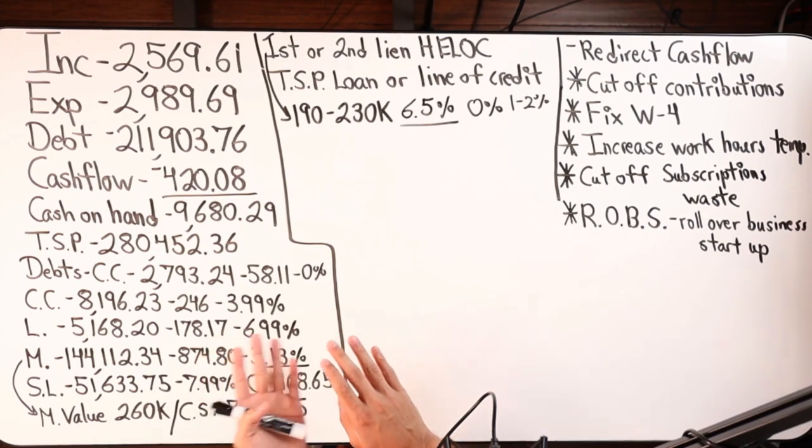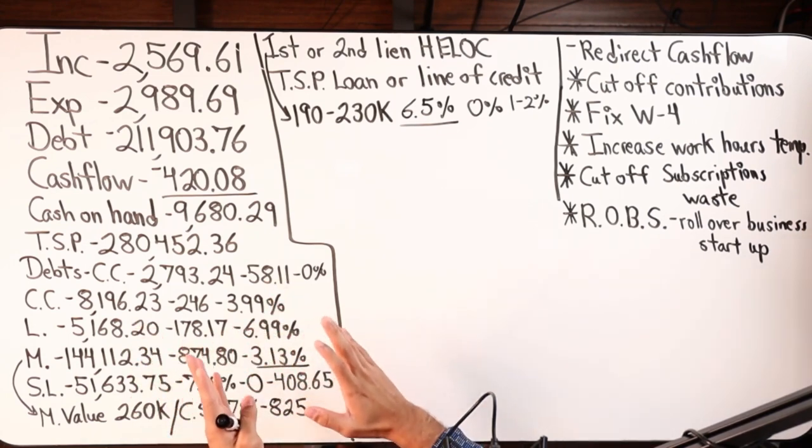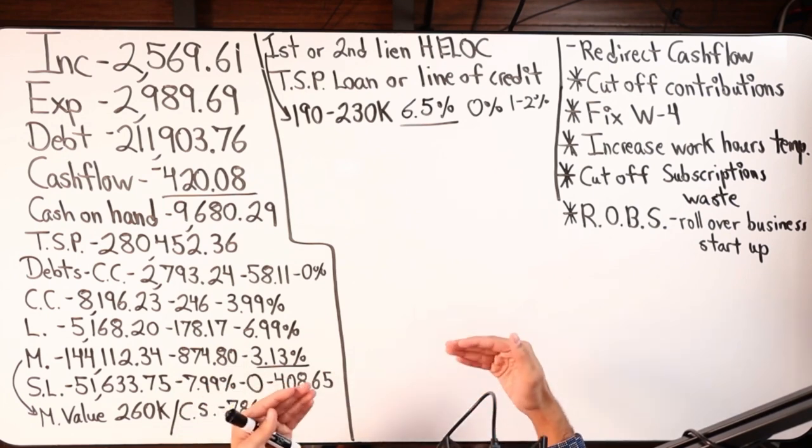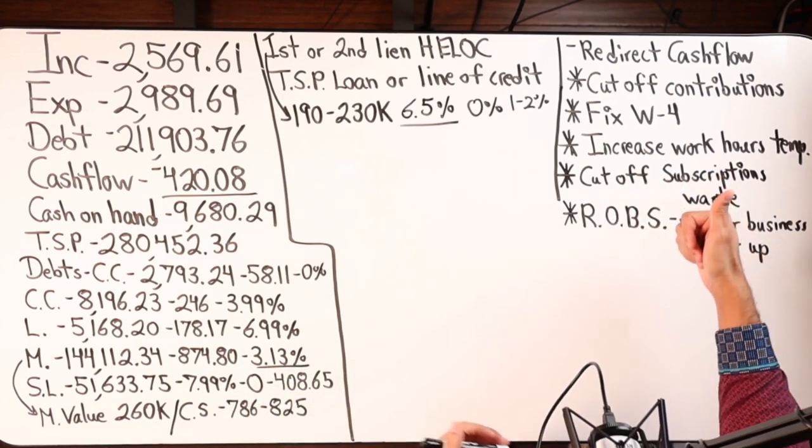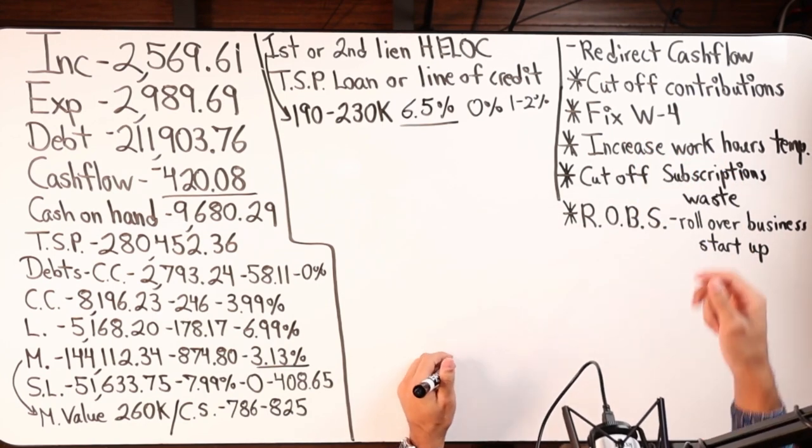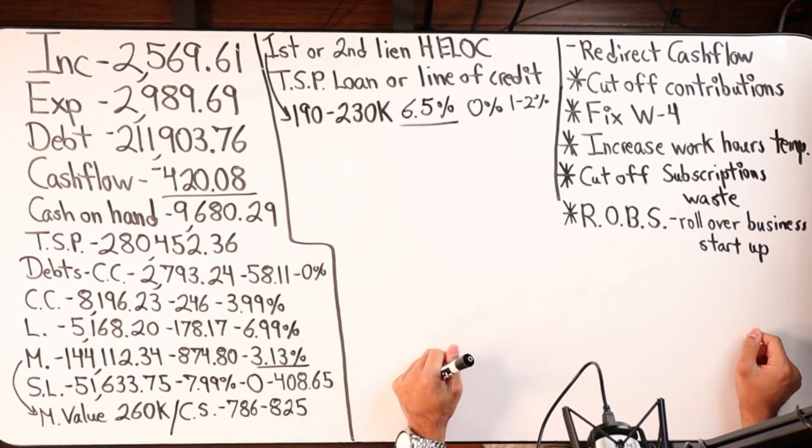While simultaneously also redirecting cash flow, I wrote some things over here. Talked about not overpaying, fixing your W-4, potentially increasing work hours at the place you already work at - that could be an option.